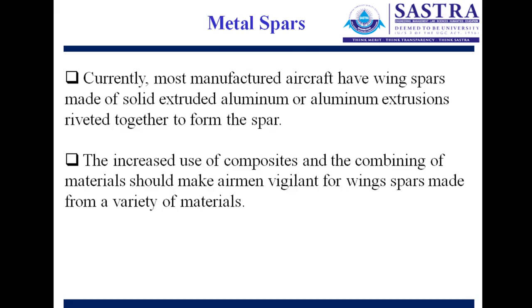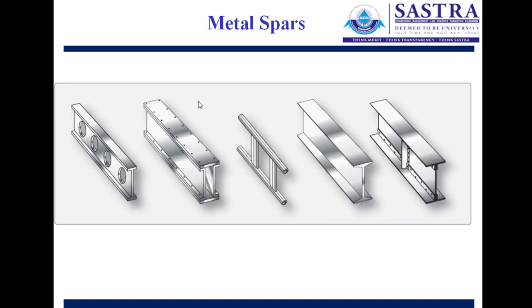Currently most manufactured aircraft have wing spars made of solid extruded aluminium or aluminium extrusions riveted together. With the increased use of composites, future aircraft spars will be made from a variety of materials. Metal spars can take various cross-sectional forms — staircase, double I-beam, or box structures — and the type is selected based on the load the wing will experience.